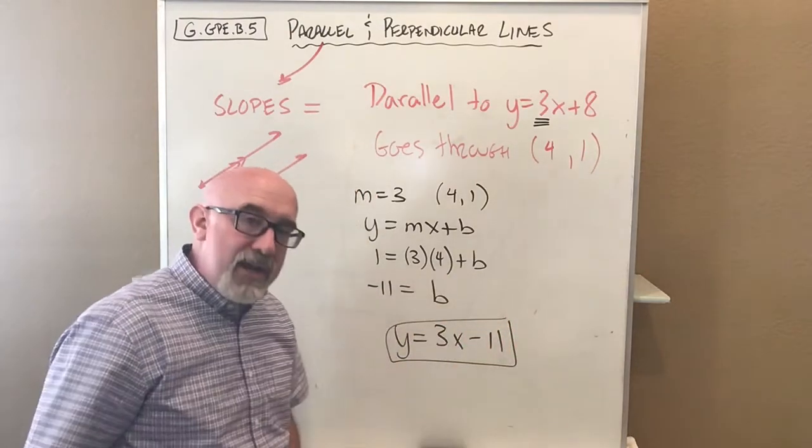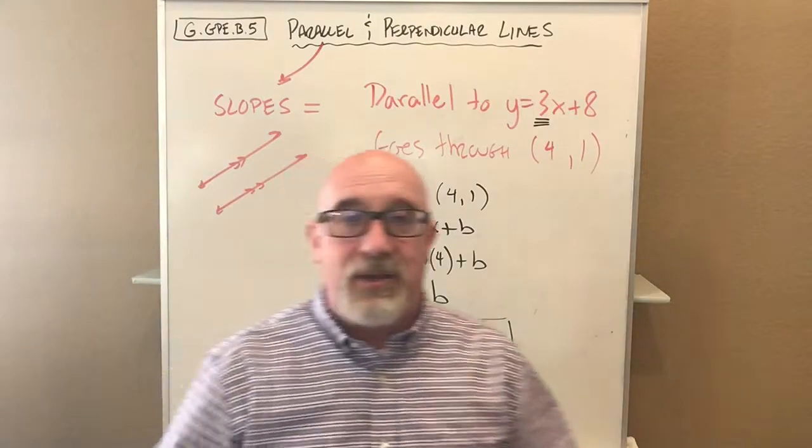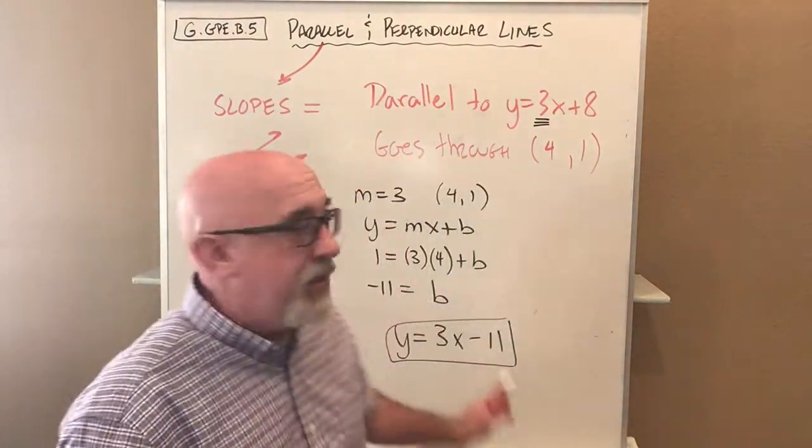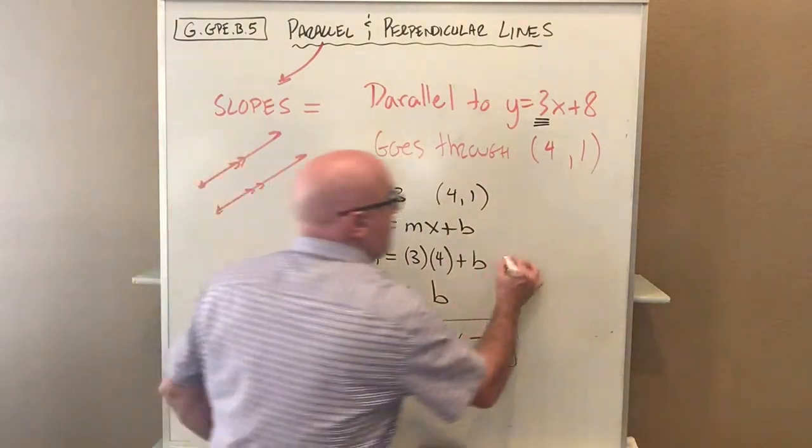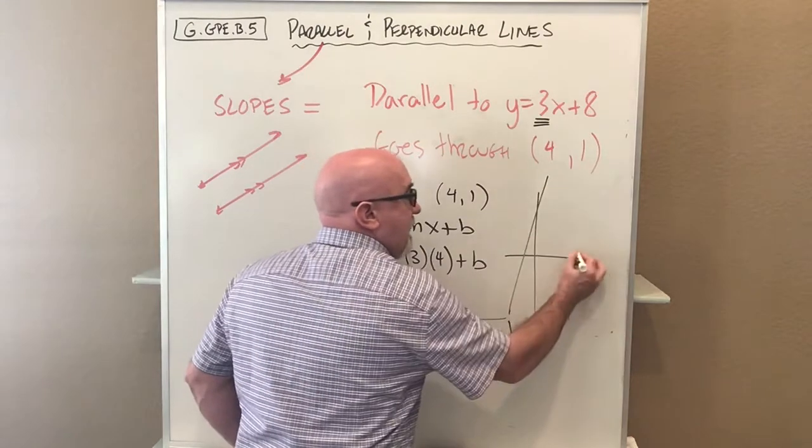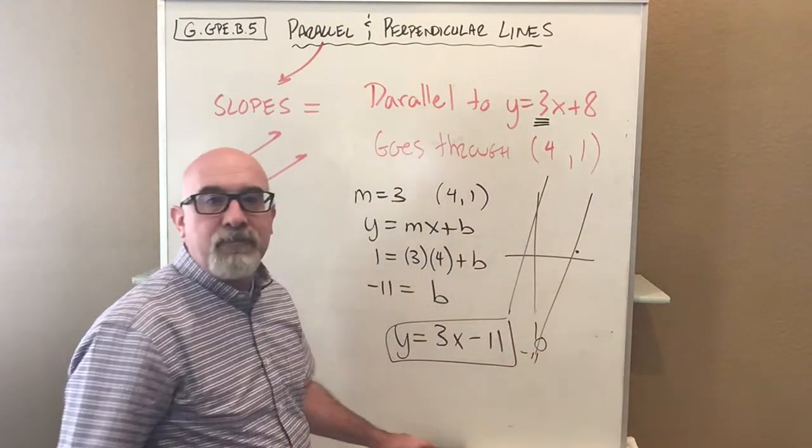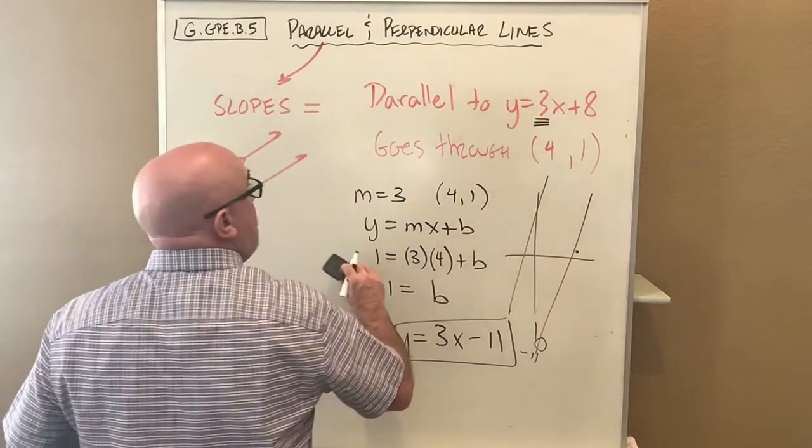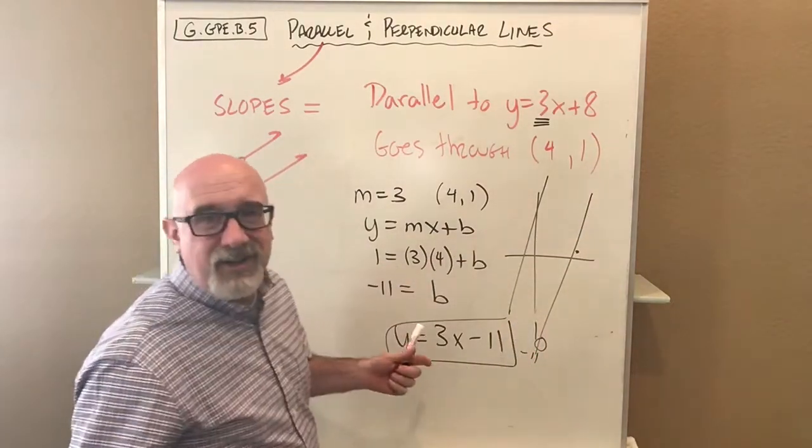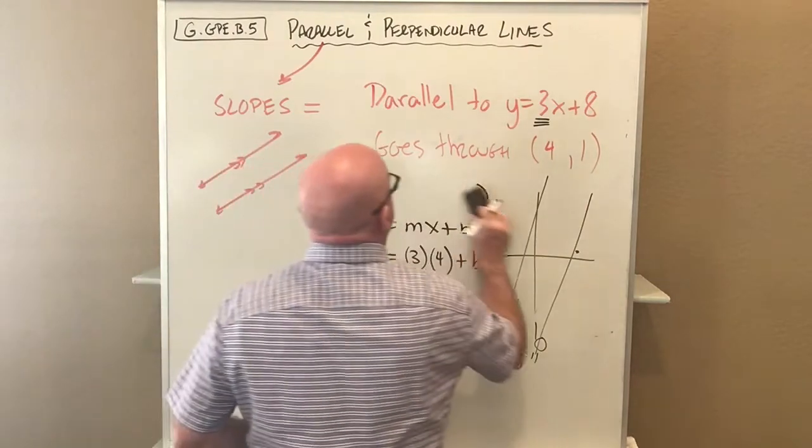This would be the equation of a line that is parallel to the one they gave us but goes through the point (4,1). We have this kind of line, and now we have this one crossing down here at negative 11. Quite easy.